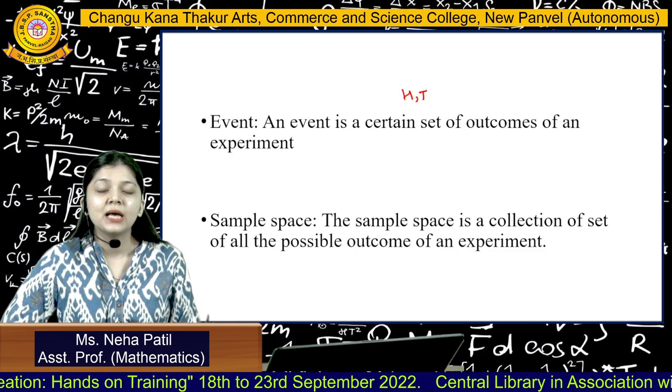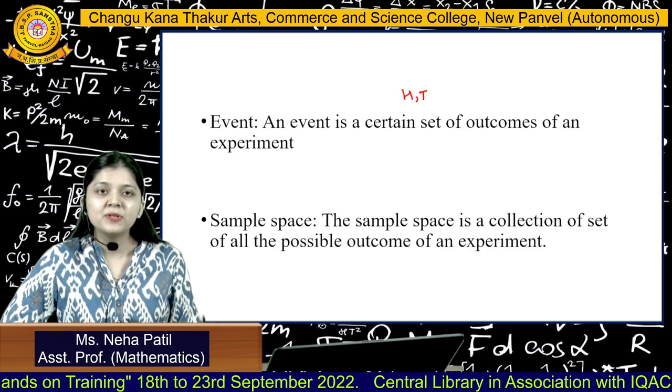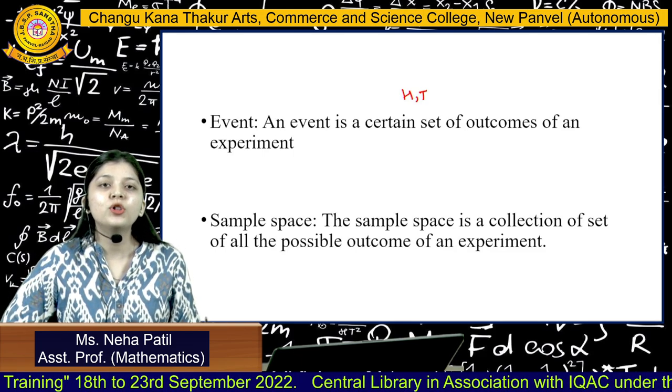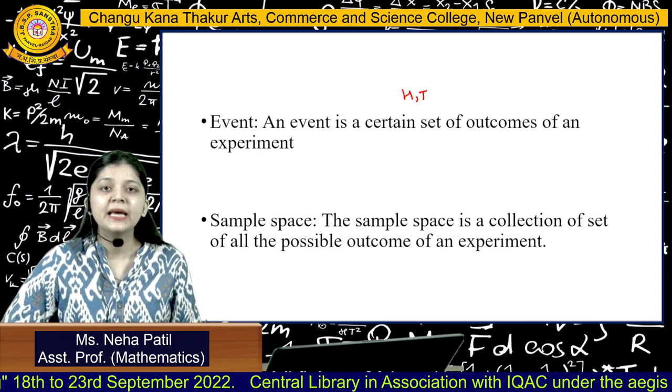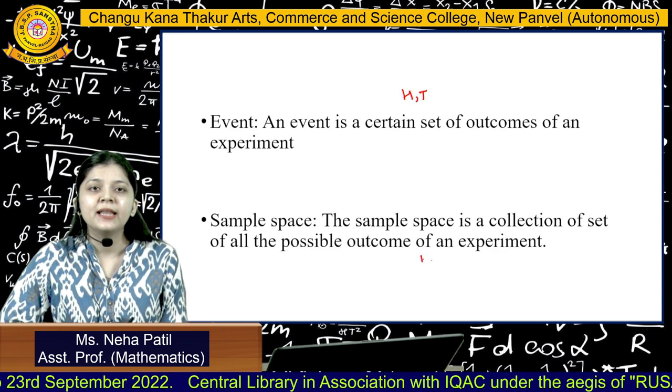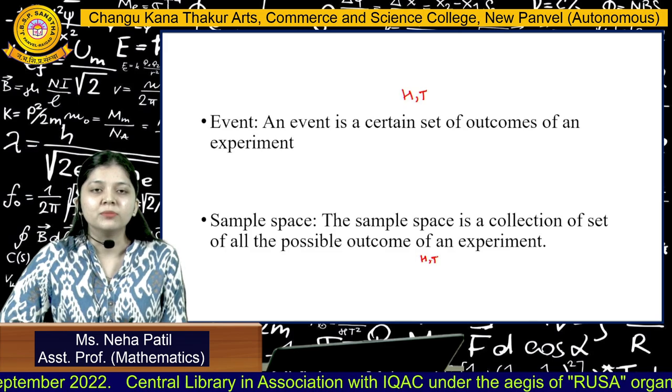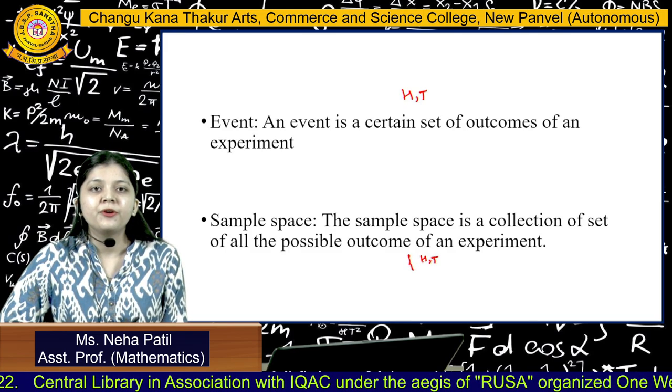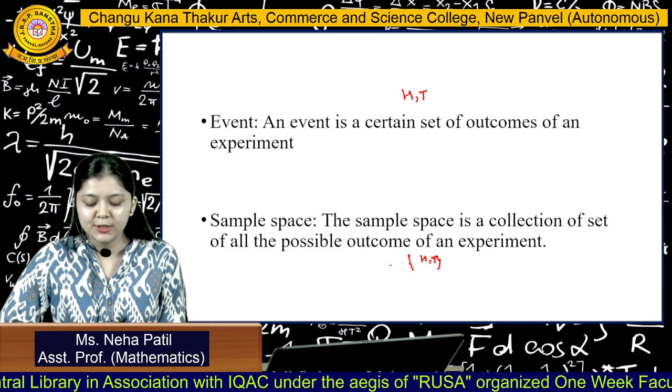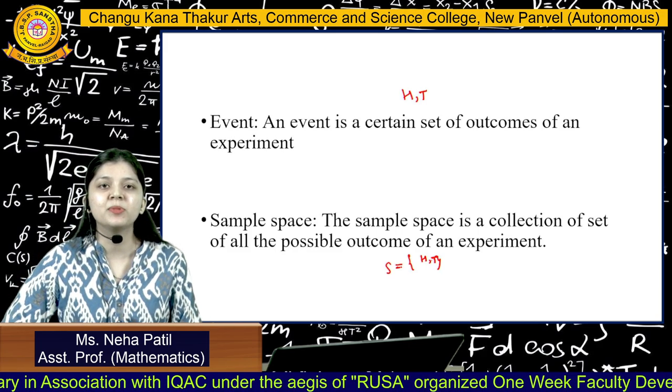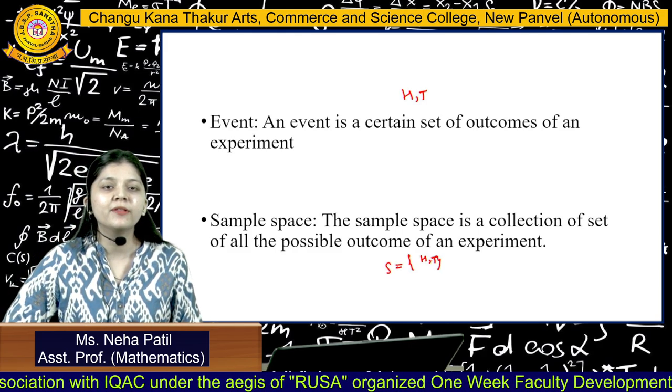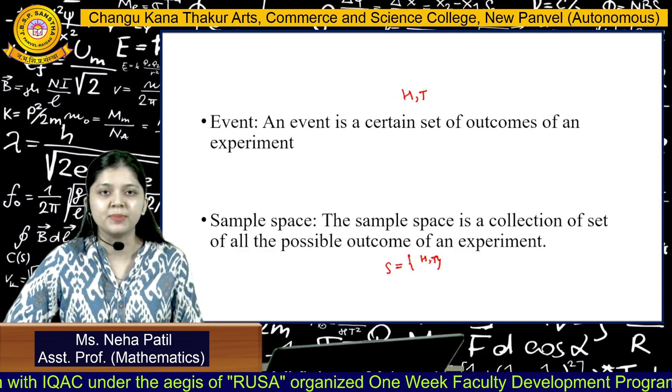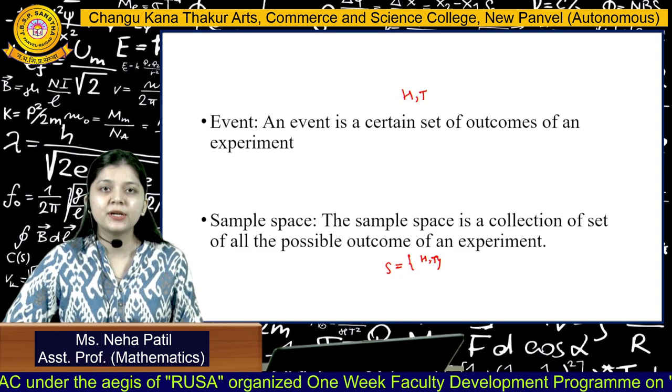What is the sample space? A sample space is the collection of set of all the possible outcomes of an experiment. Here, we have seen that H and T are our outcomes. All of them together written in one set comprises your sample space. When we write them together in one set, that is our sample space. I hope the basic concepts are clear with you all.